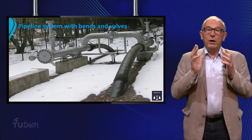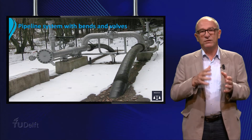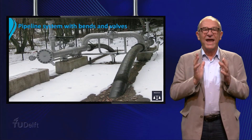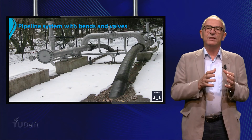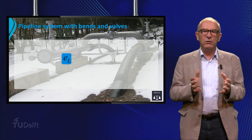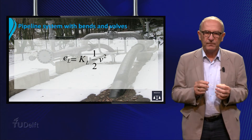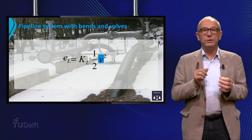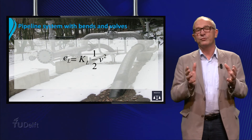Until now we only talked about straight pipes and not about pipeline systems with bends, valves, and so on. All these types of obstacles will lead to situations where extra energy is dissipated. In turbulent flows this can be easily modeled using an expression for the energy dissipation per unit of mass, E_L, that is similar to the one obtained from the Fanning equation and the mechanical energy balance. The velocity V in this equation refers to the downstream velocity and K_L is the loss coefficient of the bend, valve, or other obstructions in the flow.